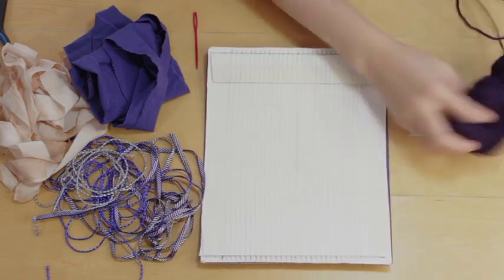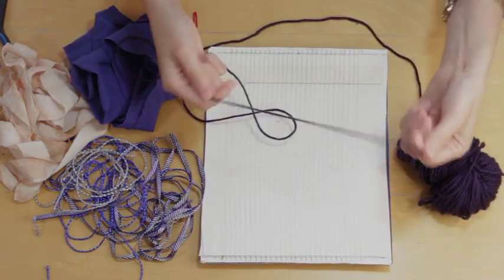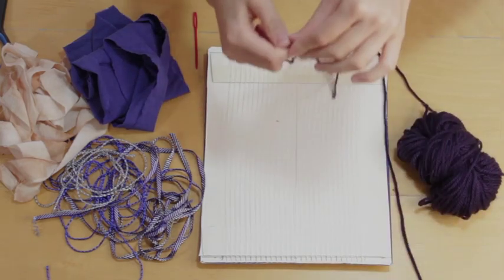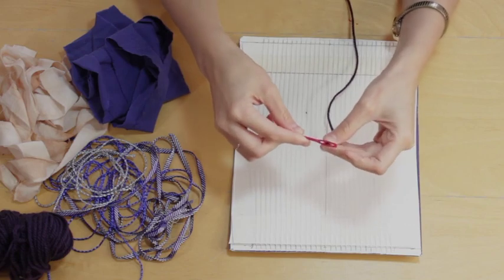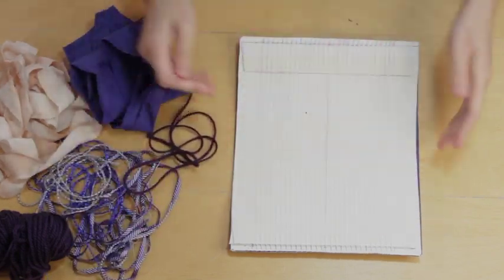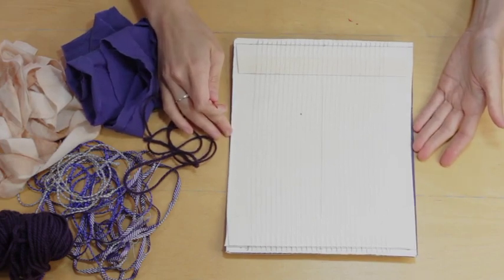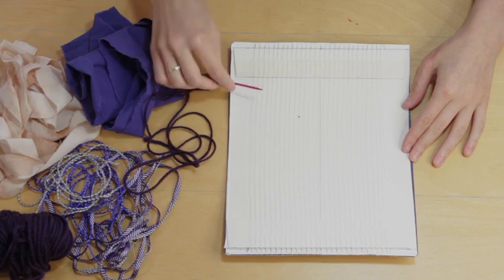So I'm going to start with this wool yarn, and to begin with I'm going to use a piece about the length of my arm, maybe just over. We're going to start with something called a plain weave, and this is just straight in and out, over and under each one of these warp threads.